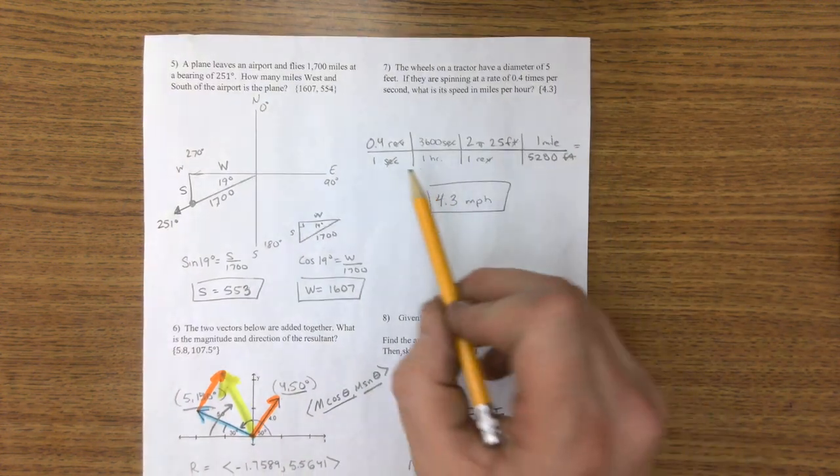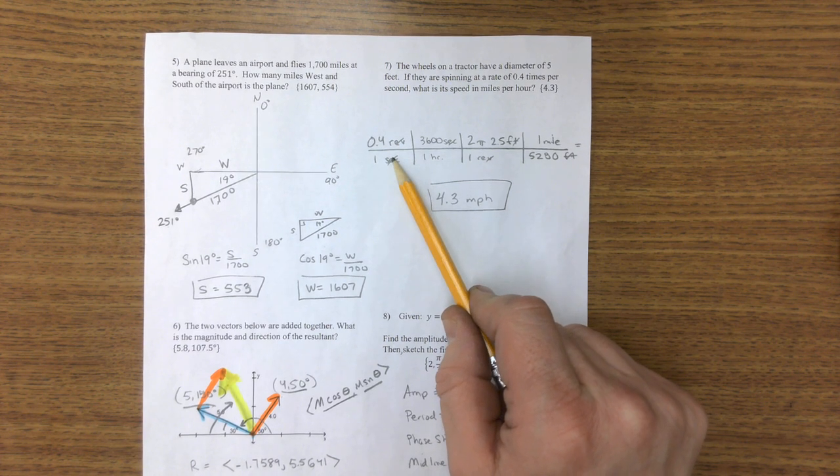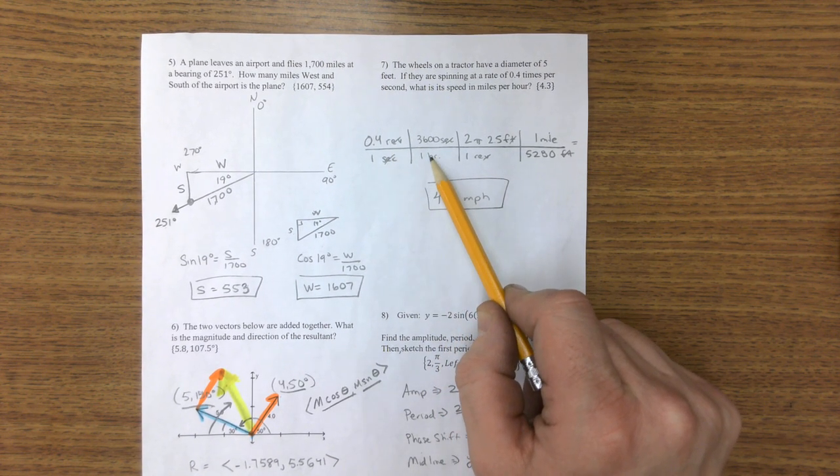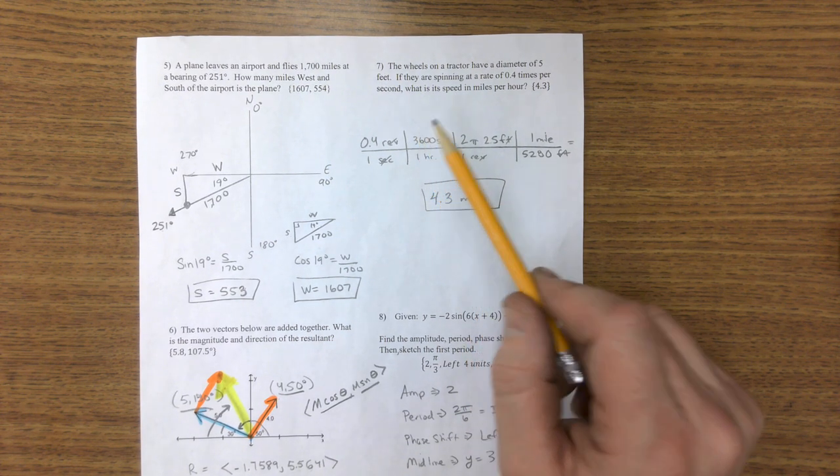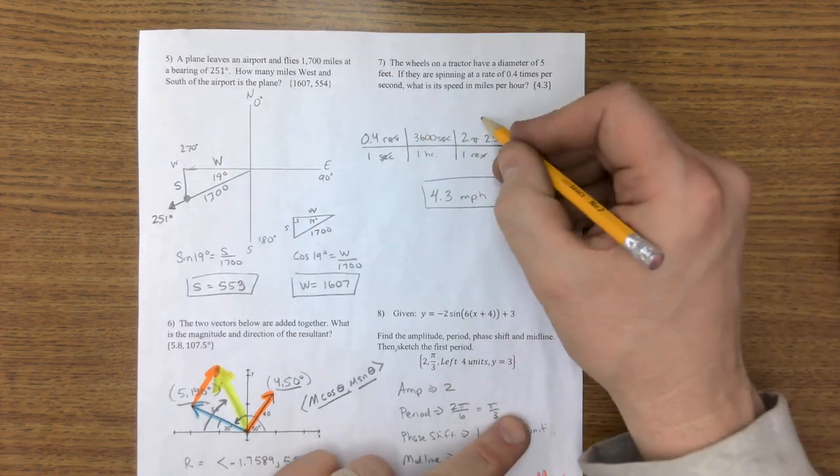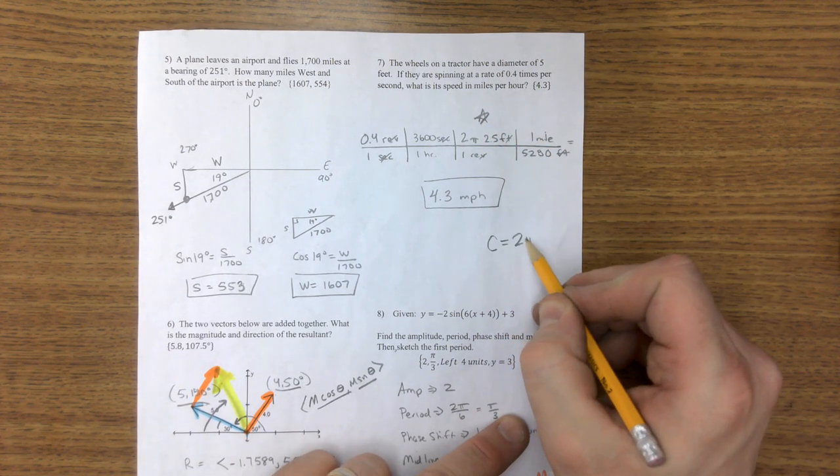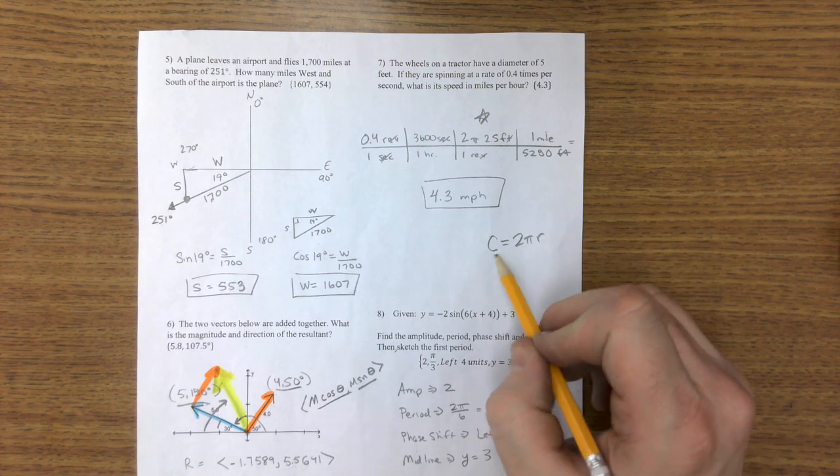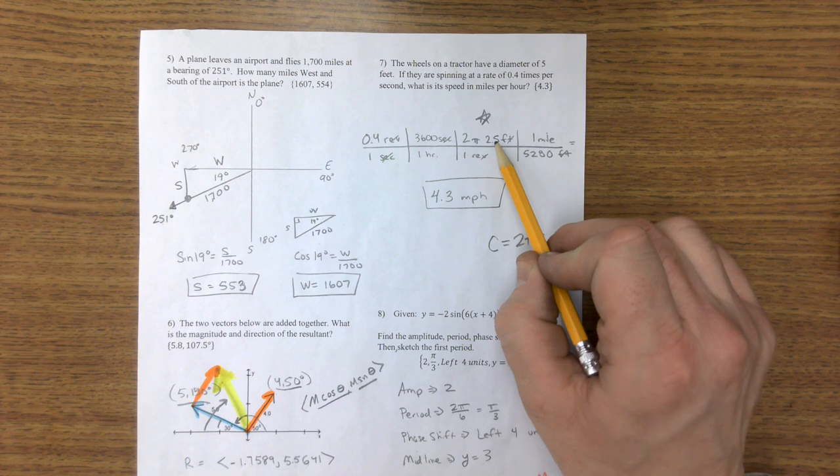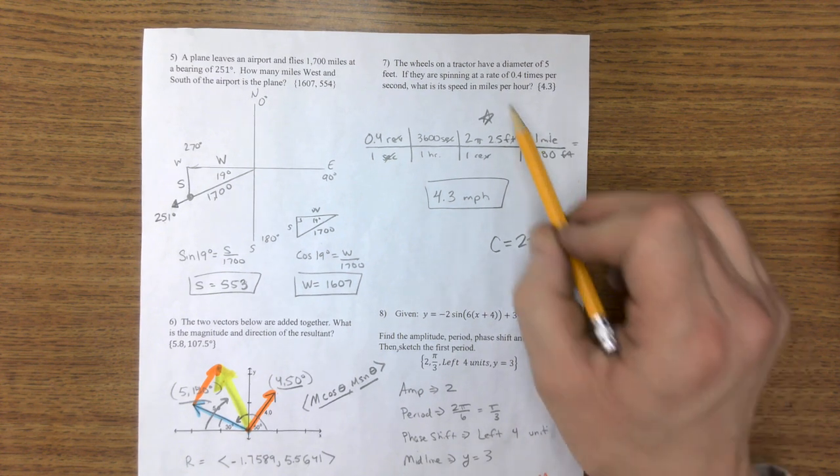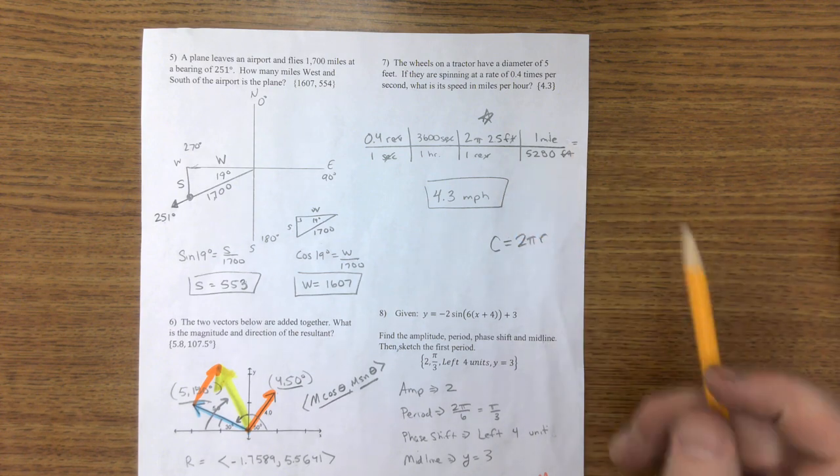On the next one, the tractor problem, we have an angular speed here, four revolutions in a second. I switched one hour's 3,600 seconds. You could have done 60 and 60 for minutes and hours. Here's the key. This is the circumference one. The circumference of a circle is 2 pi r. So around the circle, a revolution right here, around the circle is 2 pi radius. The radius here is 2.5. And then I switched the miles to feet, 4.3.